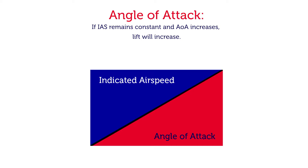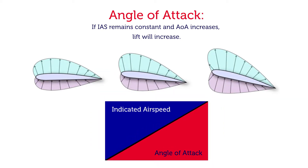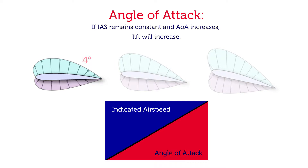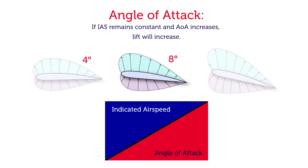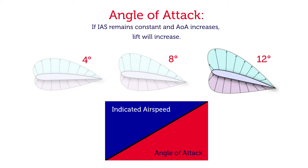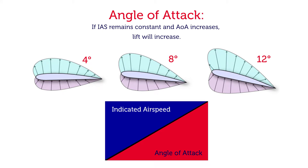If the aircraft is flying slower, we still need to produce the same amount of lift to maintain level flight, and the only way to do that is to increase the angle of attack. Looking at the three aerofoils above our rectangle, we have an aerofoil at four degrees, eight degrees, and twelve degrees angle of attack. At four degrees the aircraft is flying in level flight, producing lift as a result of both airspeed and angle of attack.